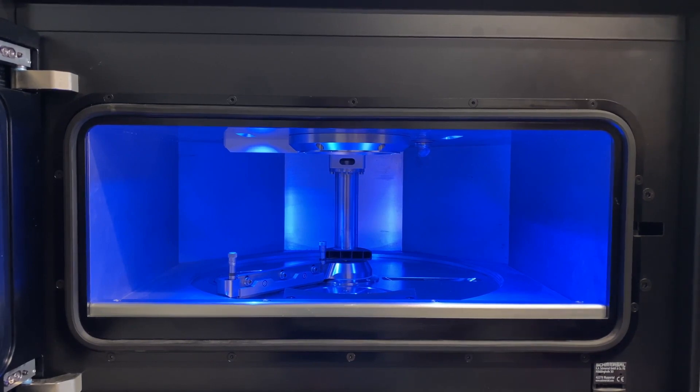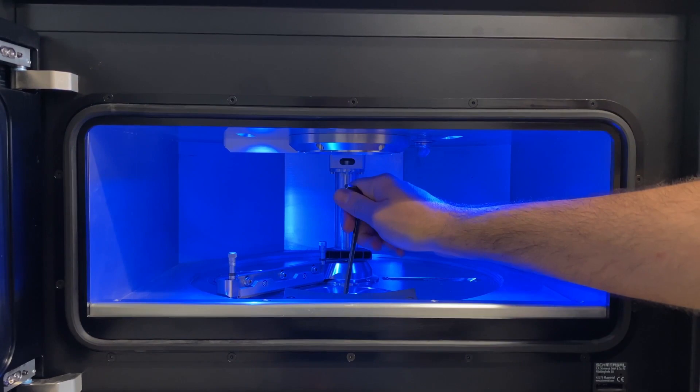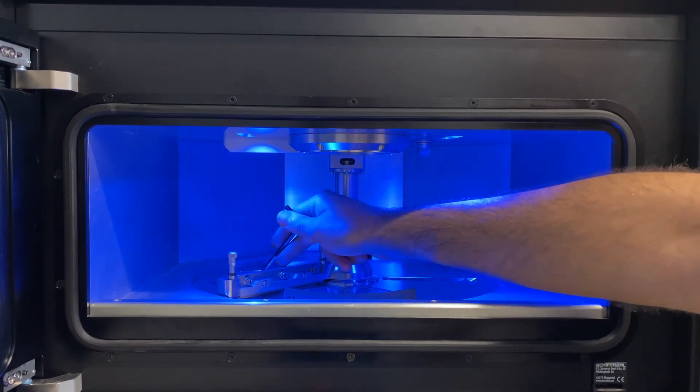Now, to prepare for our printing job, we need three new things. A new building platform, a new rubber lip, and fresh powder.